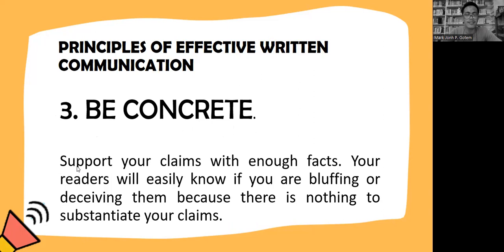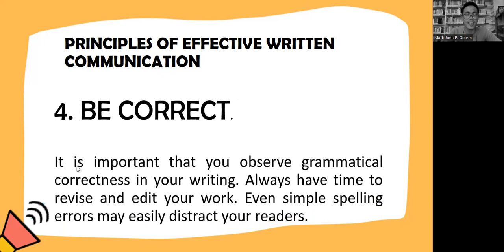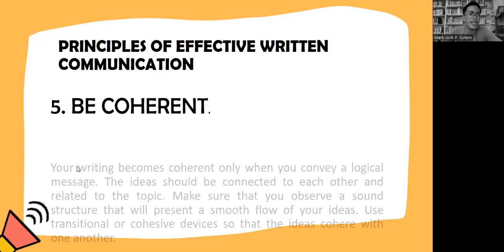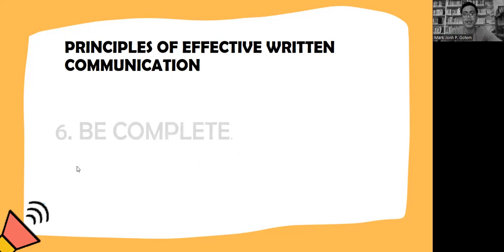Third, be concrete: support your claims with enough facts. Your reader will easily know if you are bluffing or deceiving them because there is nothing to substantiate your claims. Fourth, be correct: it is important that you observe grammatical correctness in your writing. Always have time to revise and edit your work. Even simple spelling errors may easily distract your readers. Fifth, be coherent: your writing becomes coherent only when you convey a logical message. The ideas should be connected to each other and related to the topic.